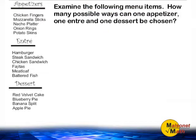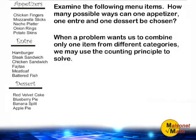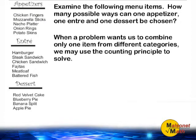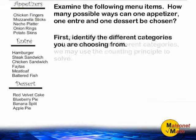This problem is asking us how many possible ways can one appetizer, one entree, and one dessert be chosen? When a problem is asking us to choose only one item from each of the given categories, we may use the counting principle to solve our problem.